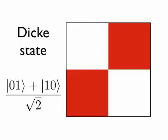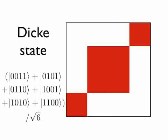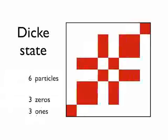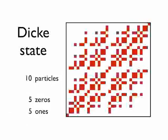For example, let us consider the Dicke state at half-filling. This is the state that has the same number of zeros as ones, and is symmetric with respect to the interchange of particles. Notice how the structure develops as we add more and more particles.